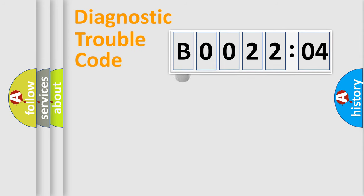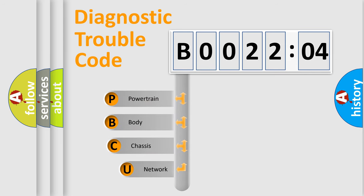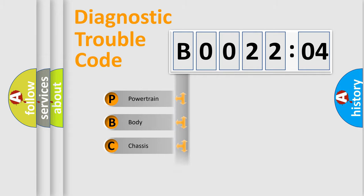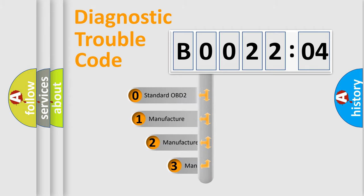First, let's look at the history of diagnostic fault code composition according to the OBD2 protocol, which is unified for all automakers since 2000. We divide the electric system of the automobile into four basic units: Powertrain, Body, Chassis, and Network. This distribution is defined in the first character of the code.